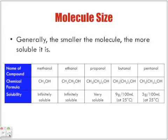We have methanol, ethanol, propanol, butanol, pentanol. Infinitely soluble, so very soluble. Look at it. CH3OH, smallest molecule. Now we're adding CH2 to it. Still infinitely soluble, but it's still rather small. But now notice, very soluble.